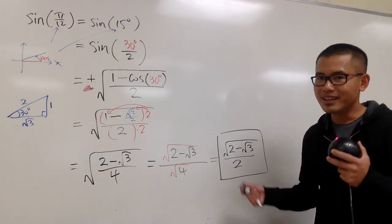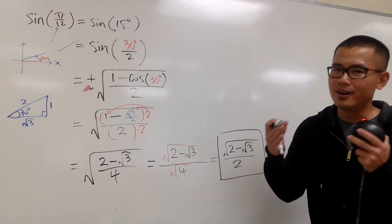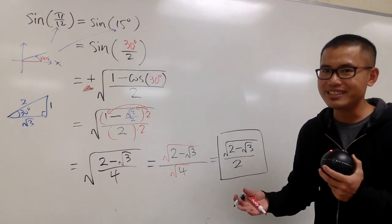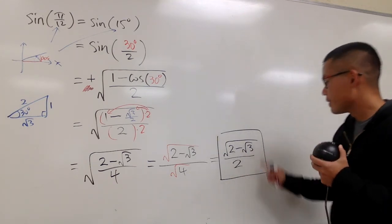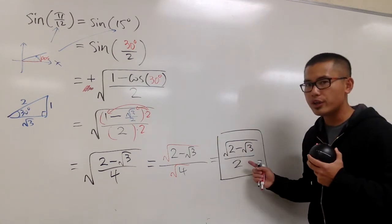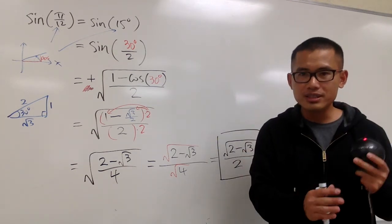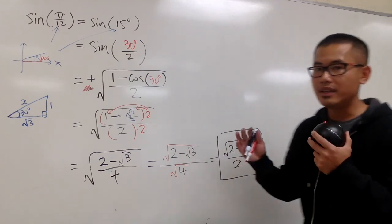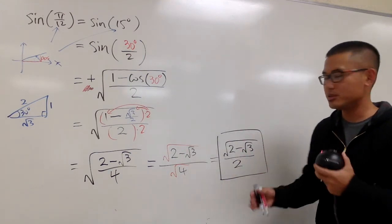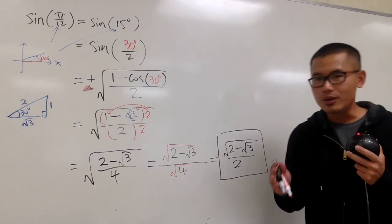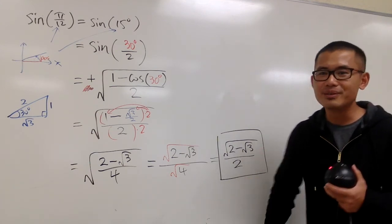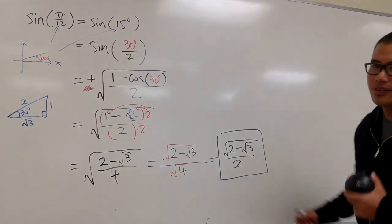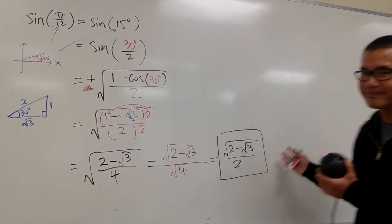And you may be wondering, this looks so different than the result that we got previously. But I will tell you they are the same. One way you can verify that is, you can just go ahead and punch this onto your calculator, and you can punch the result that we got previously on the calculator as well. The answer will be the same in the decimal form, so they will be the same. And if you would like, I will show you how we can do them with our calculator in the next video. But anyway, this will be it. Half-angle formula for the sine. That's it.